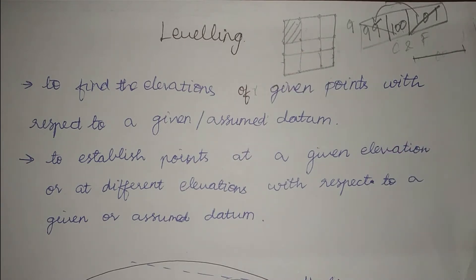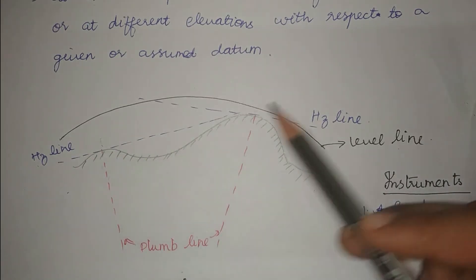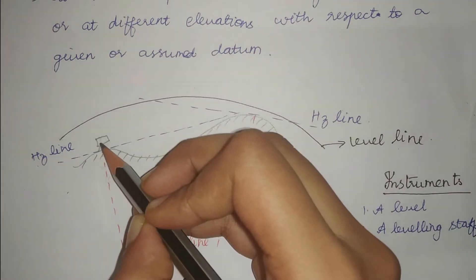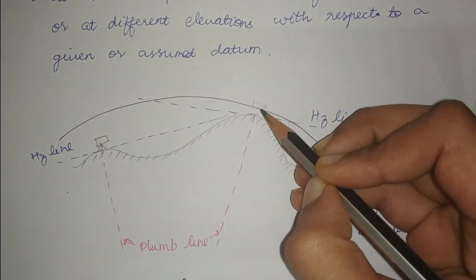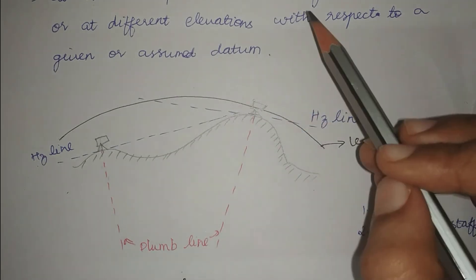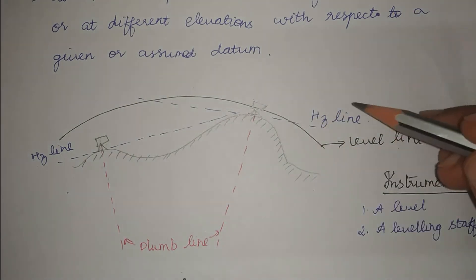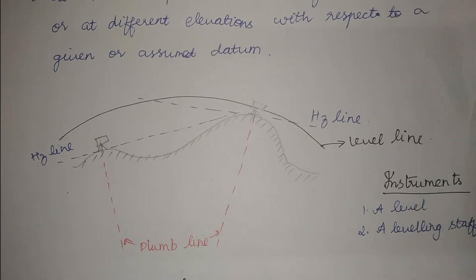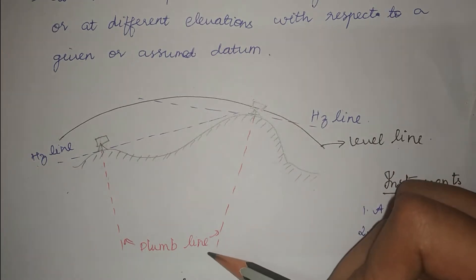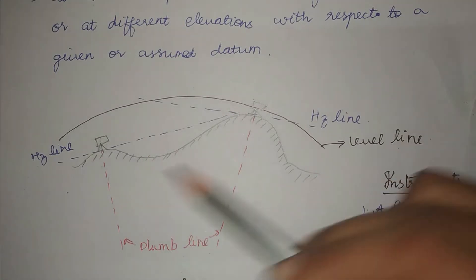Before going into the methods of leveling, let us understand the concept better. This line represents the earth's surface, and I am going to set up my leveling instruments at two points. We know that the earth is not an even surface — we have undulations. Whatever we have on the surface, one thing is common: gravity always acts towards the center of the earth, and the plumb line will always point towards gravity.